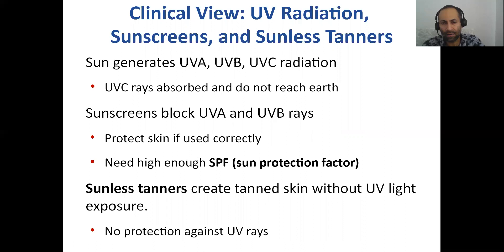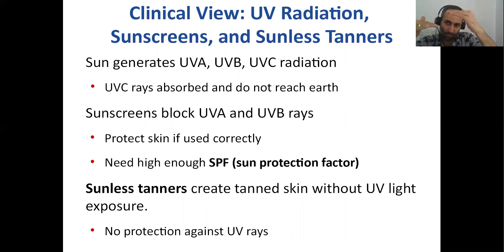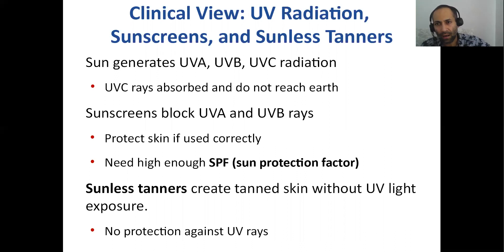Regarding ultraviolet radiation and sunscreens: a study found that 40 to 50% of famous sunscreen brands had high levels of benzene, which is a carcinogen that causes cancer. Interestingly, you're putting on sunscreen to prevent cancer, but the sunscreen itself can contain a cancer-causing agent. It's about balance and homeostasis. Ideally, sunscreen should have an SPF of 15 or more to prevent DNA mutations in skin cells and avoid malignant melanomas and skin cancers.